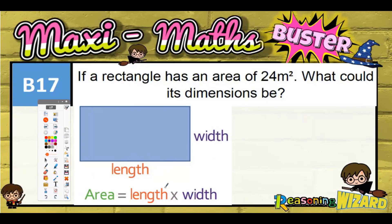Well, to get the area, as it says down here, you've got to do length times width. In other words, you're timesing two numbers together. So we're going to get two numbers times together to get 24 because the area has to equal 24.